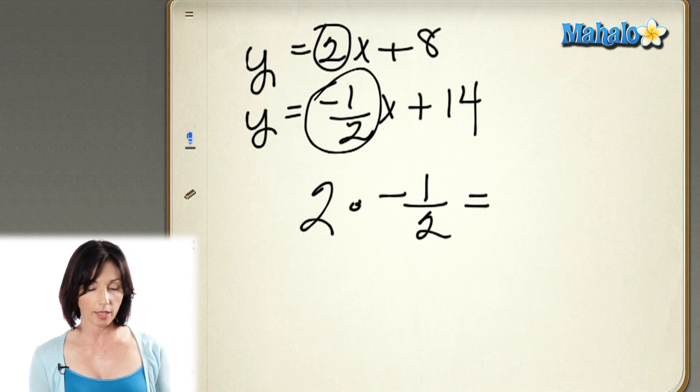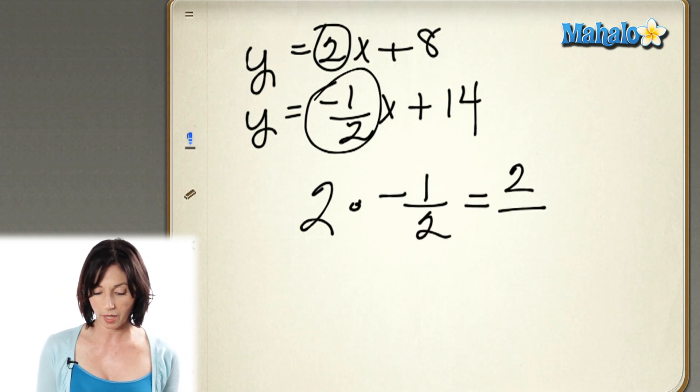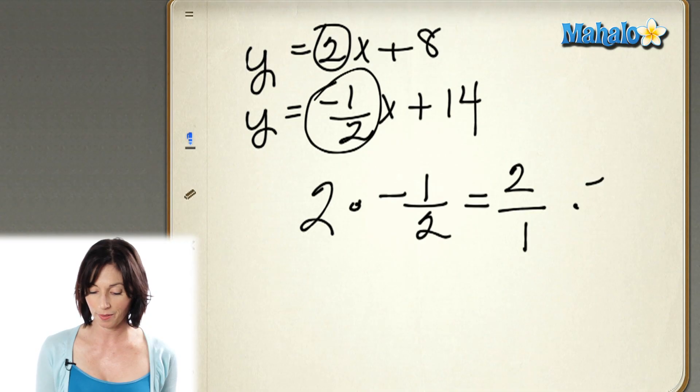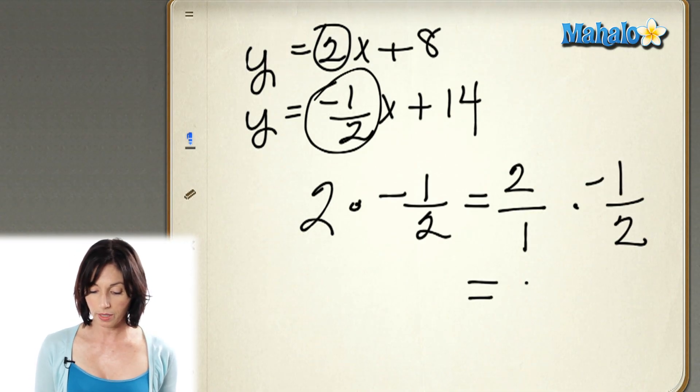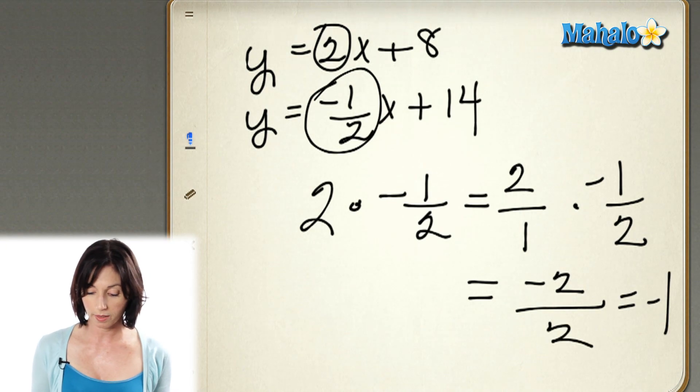Now, I can rewrite 2 as 2/1. I'm going to do that just to make my multiplication a little easier. So what do I get here? I get negative 2/2, which is the same as negative 1. Because the product of these two slopes is negative 1, that means that these two lines are perpendicular to each other.